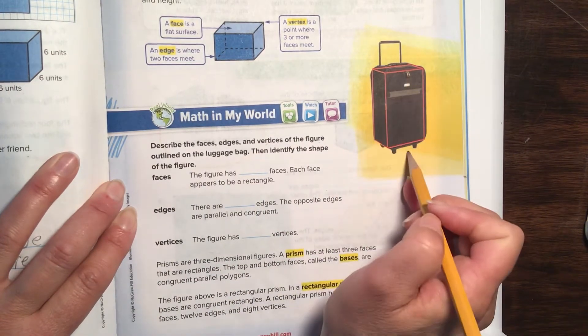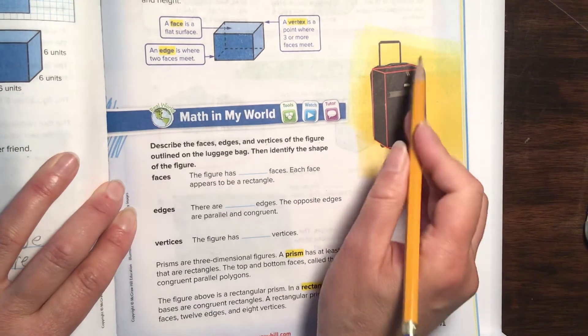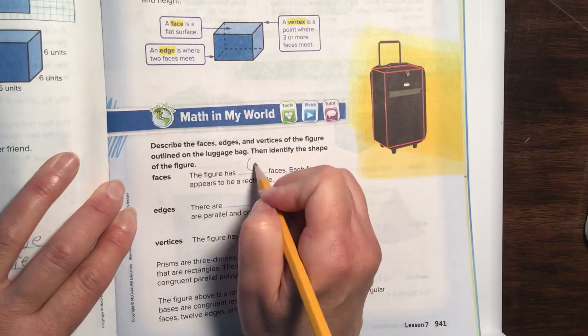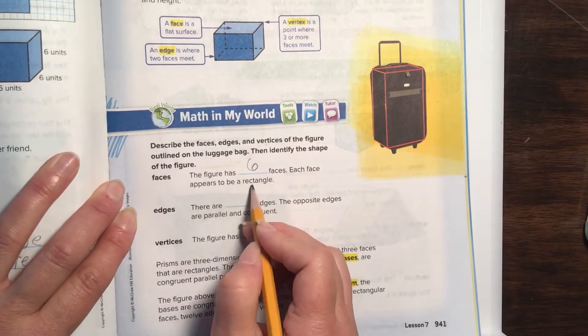Faces. The figure has how many faces? If we were going to count all the faces: one, two, then there's four on the back—one, two, three, four. So six total. Four all the way around. Six faces.